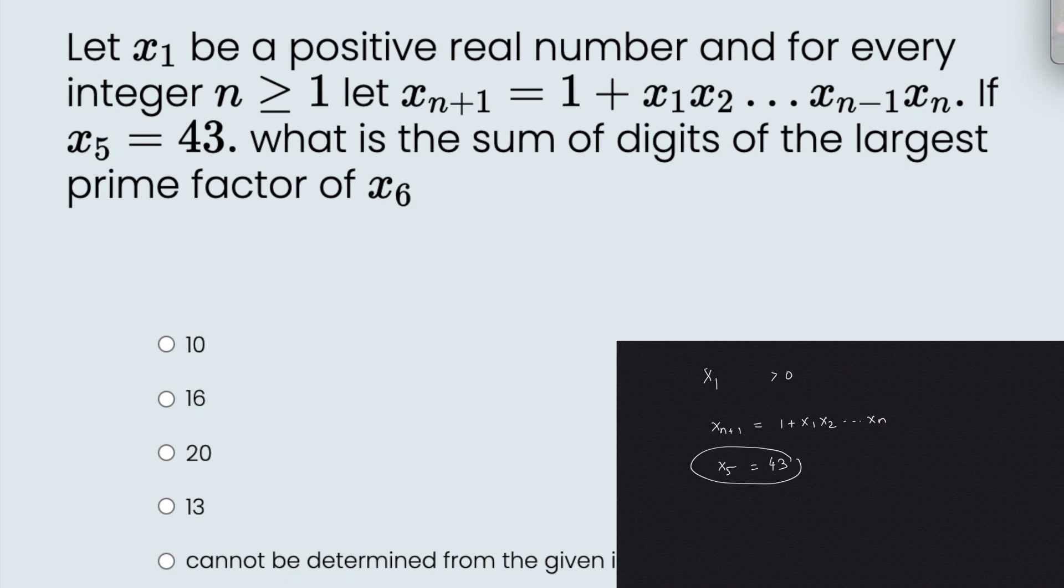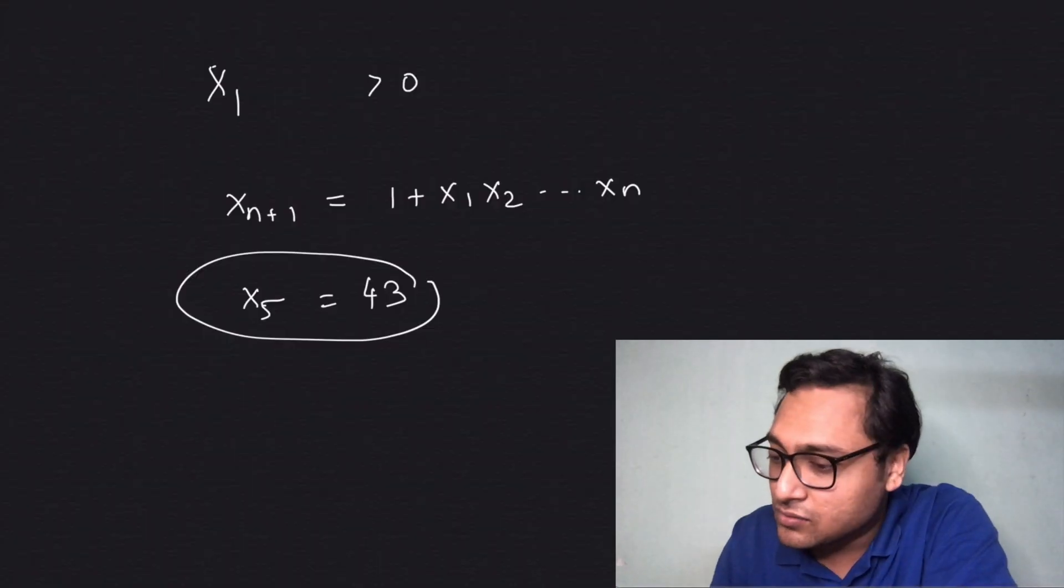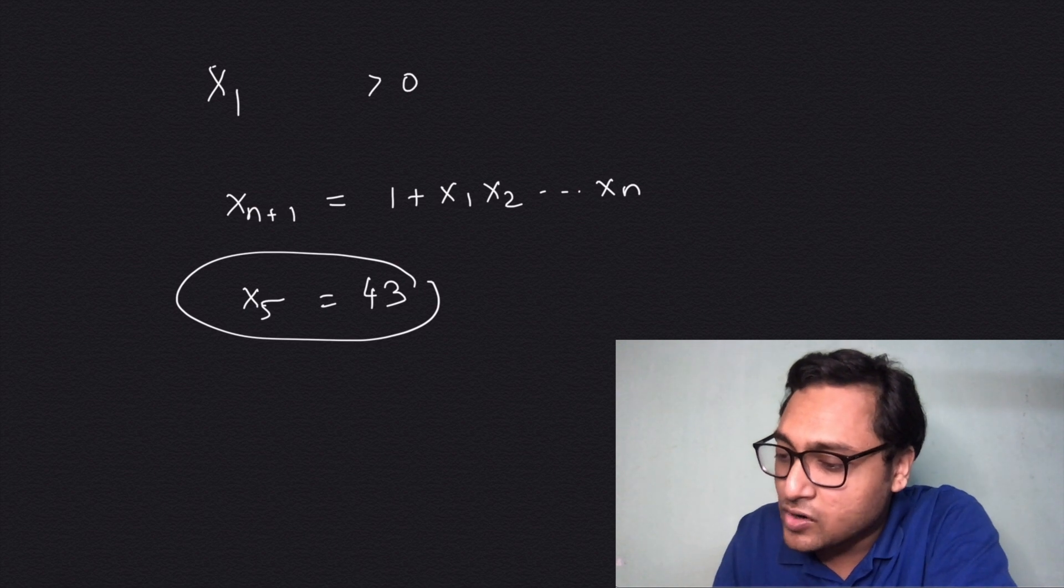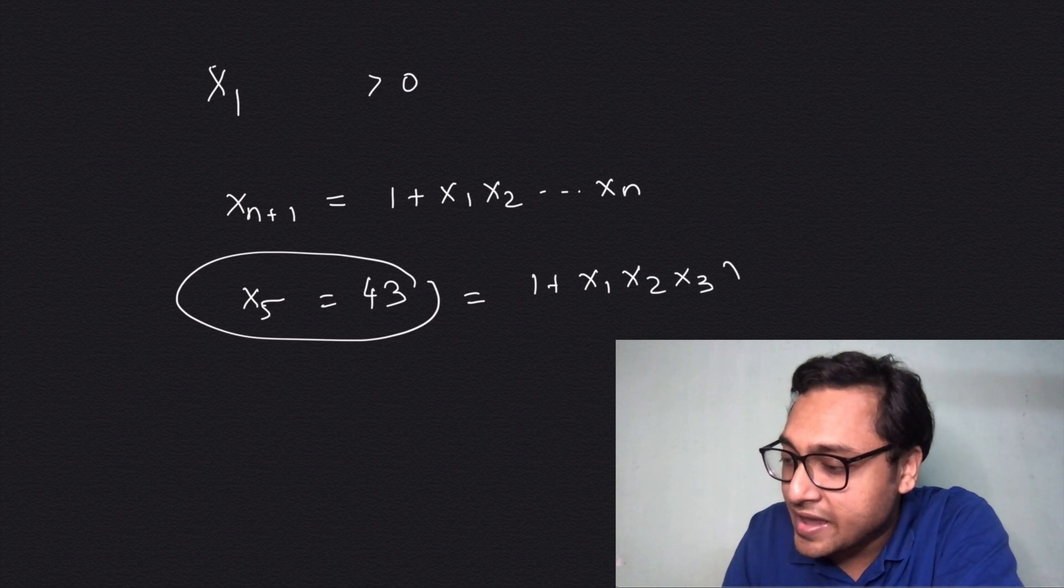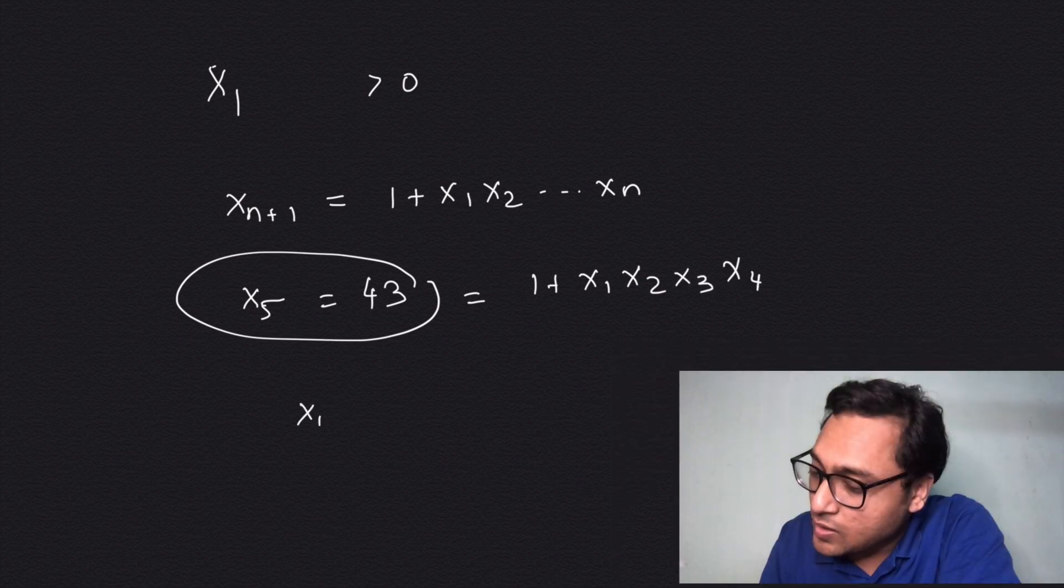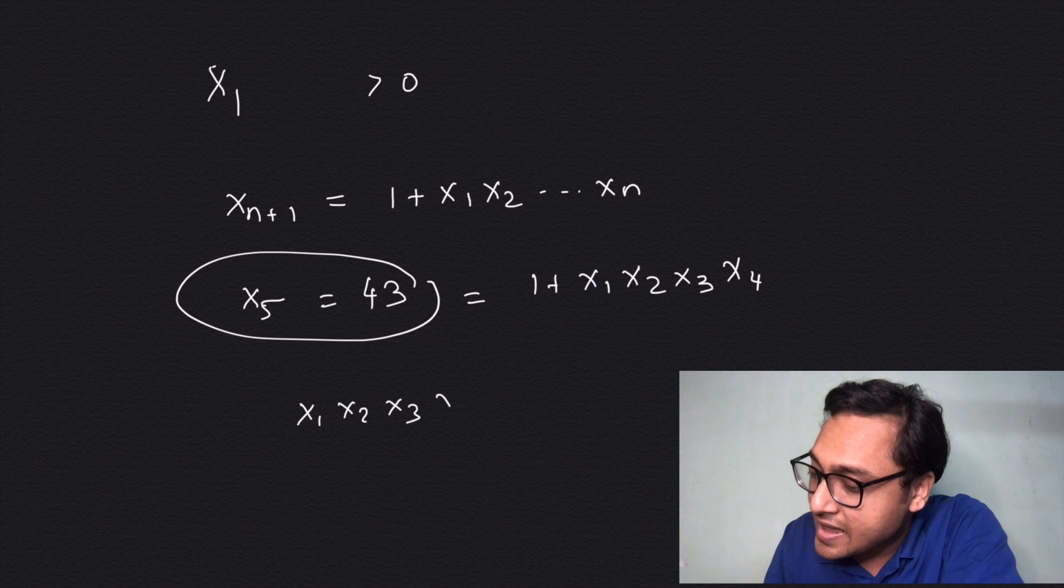So what is the sum of the digits of the largest prime factor of x6? Clearly, if x5 is 43, then that equals 1 plus x1·x2·x3·x4, so x1·x2·x3·x4 is 42 because I can take this 1 to the other side.